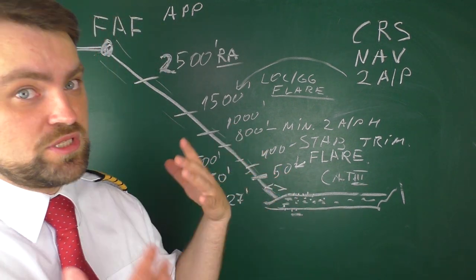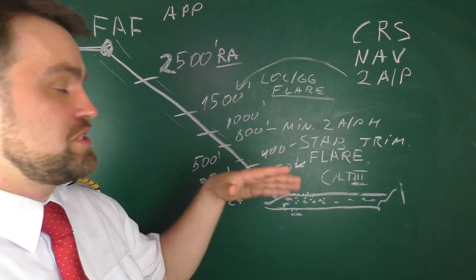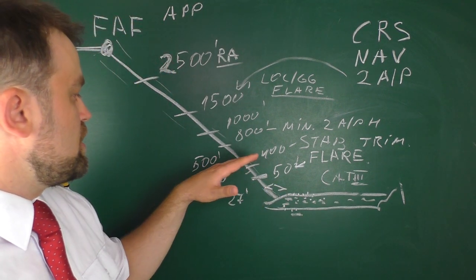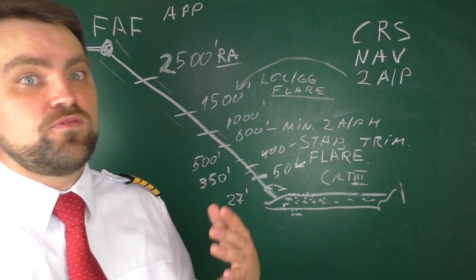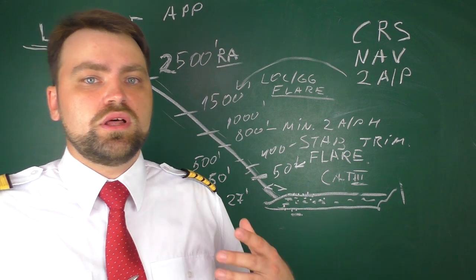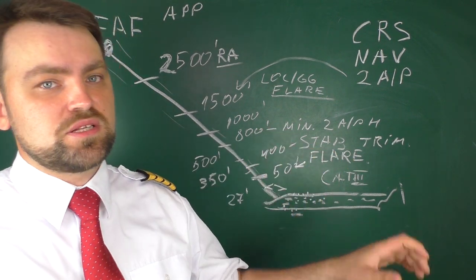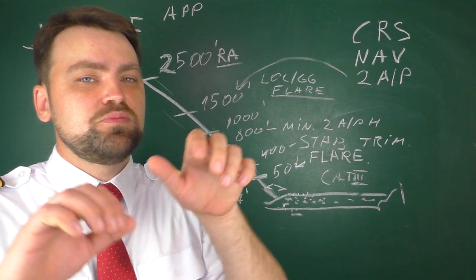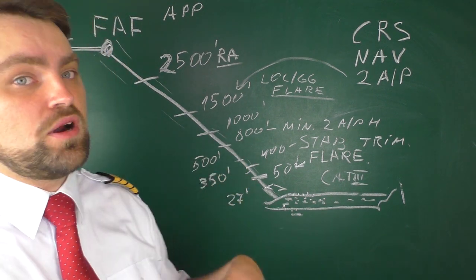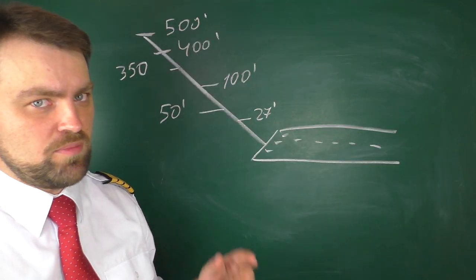If you are stable and continue the approach, 800 feet is the next altitude and the latest point where you can still select the second autopilot for automatic approach and landing. At 500 feet, you check whether the flare is armed. The pilot monitoring calls '500, flare arm' and places a hand on the thrust levers — both hands should be on the thrust levers in case of a go-around. The pilot flying responds, confirming altitude and flare arm.